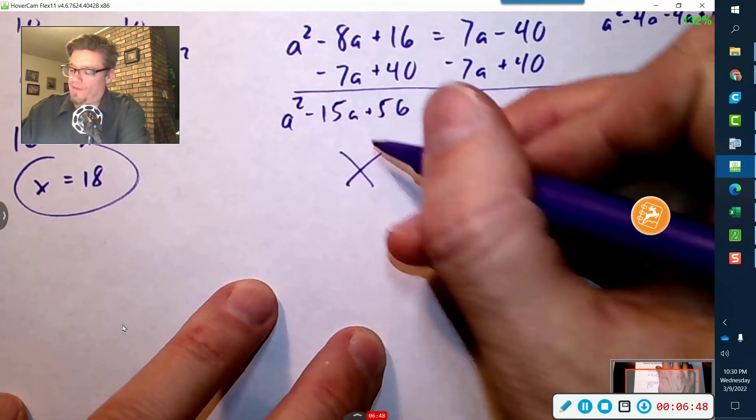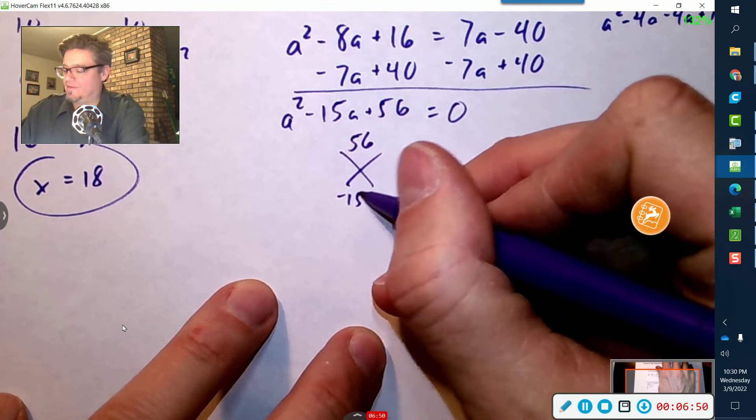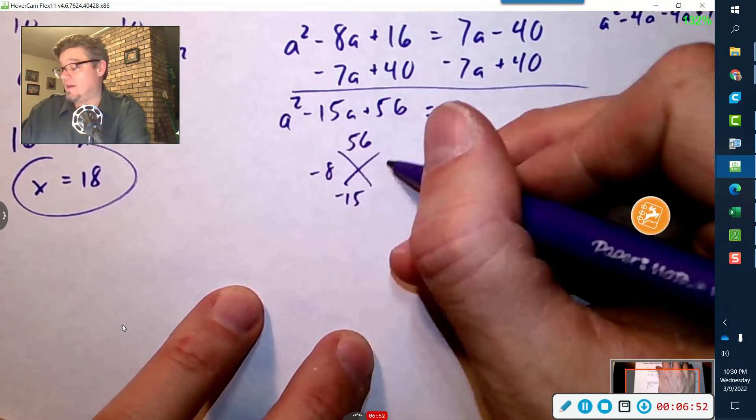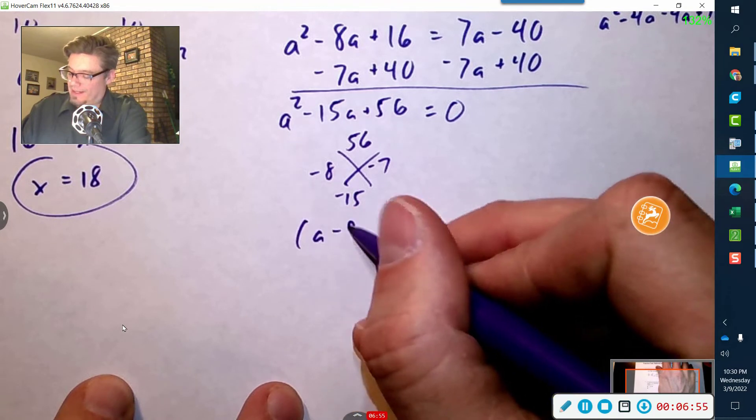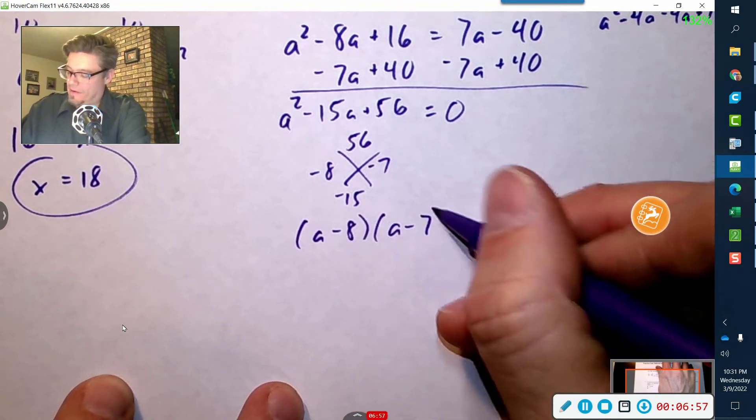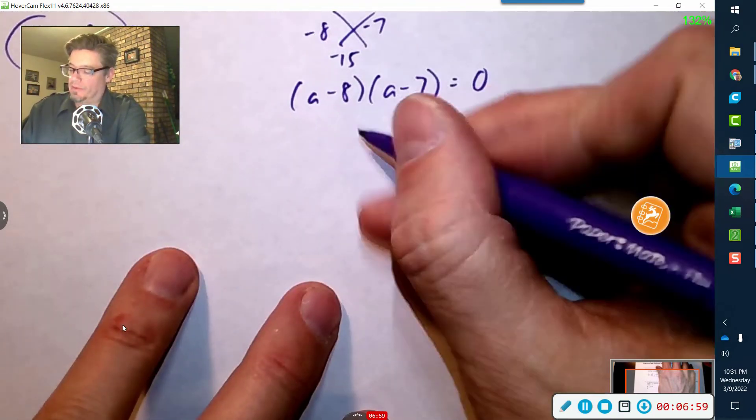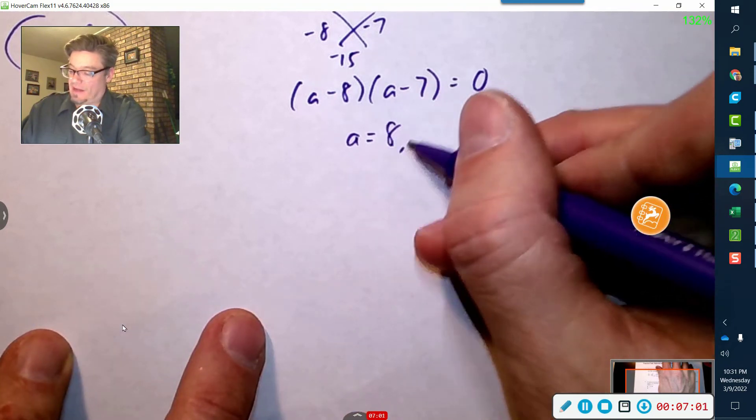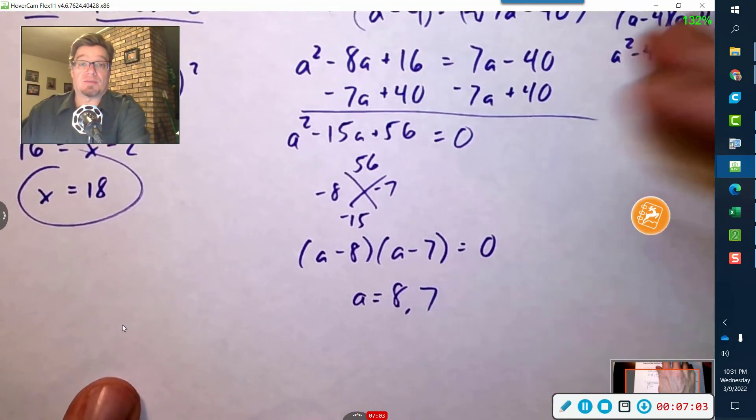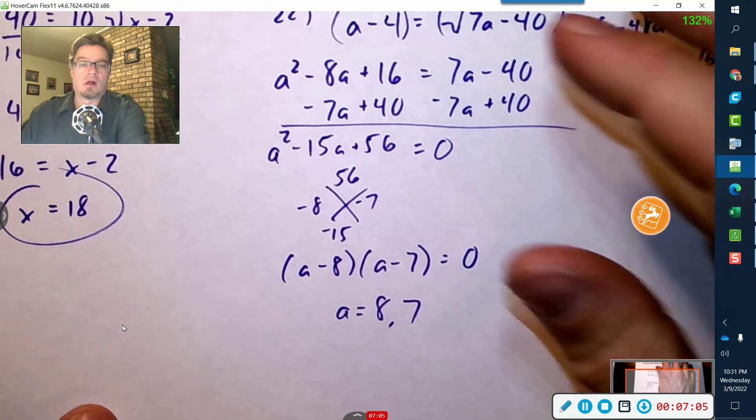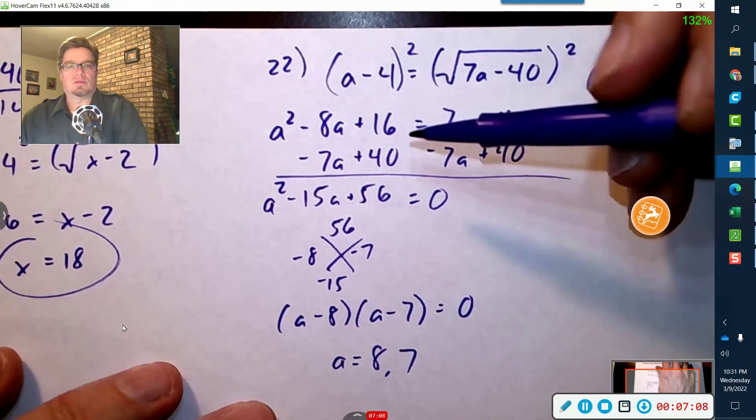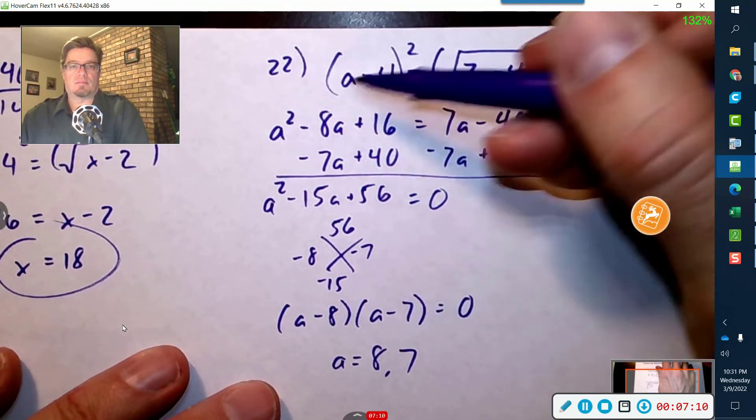We're looking for factors of fifty-six, so that's negative fifteen, and that is negative seven and negative eight. So a minus eight and a minus seven equals zero. Okay, so that gives us positive eight and positive seven. Now I did that fast because it should be fast for you.